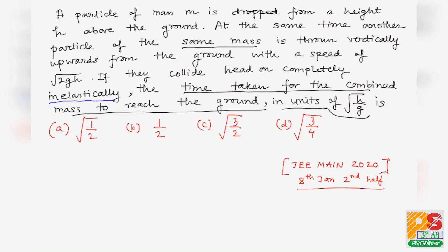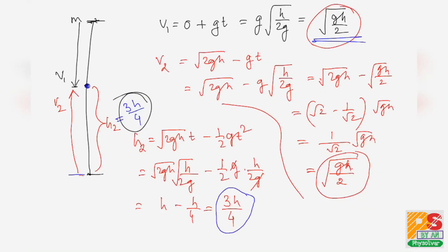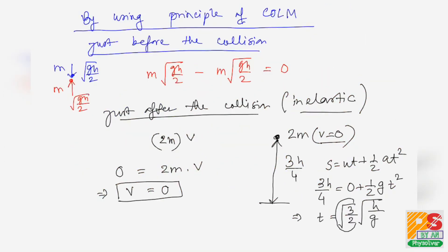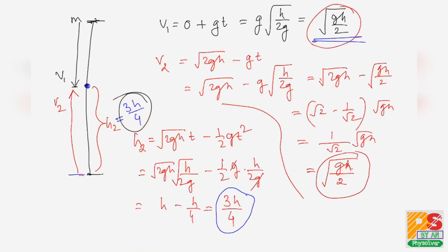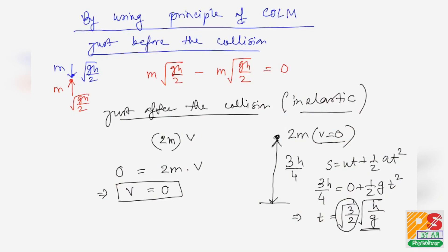The question asks for the time in units of √(h/g), which means we need the factor of √(h/g). The answer is √(3/2) times √(h/g), so the answer is √(3/2) and option C is correct. I hope you understand this question — thank you for watching, please subscribe to my channel Phi Solver.